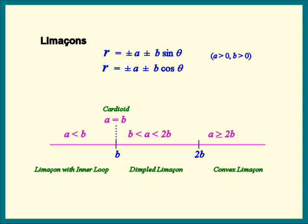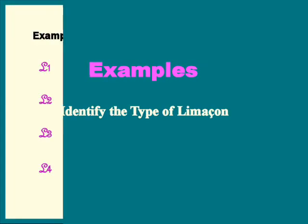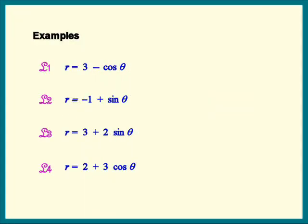Are we ready for examples? Here are four equations. Let's try to identify the type of limaçon each equation represents. Who can find the cardioid? There it is. A and B are 1 in that equation.